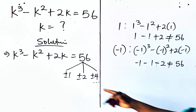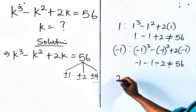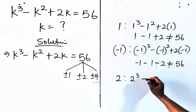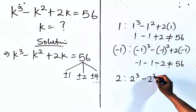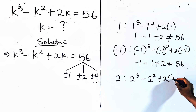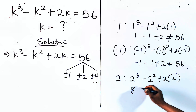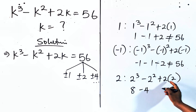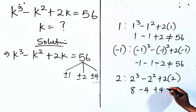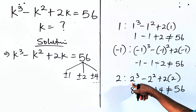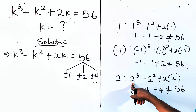So we check for when k is 2. We have 2 cubed minus 2 squared plus 2 multiplied by 2. This will give us 8, this is 4, and this is 4. And this is not also equal to 56. So we also check — you can try for negative 2.